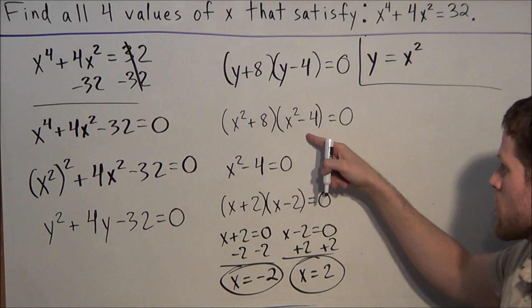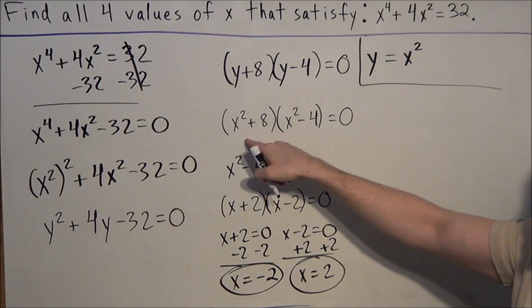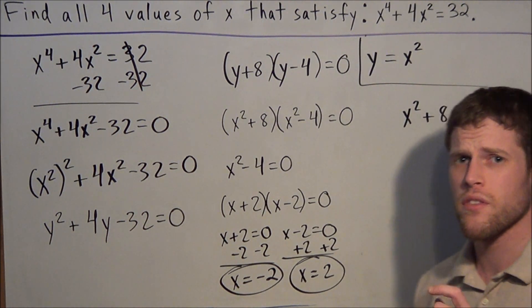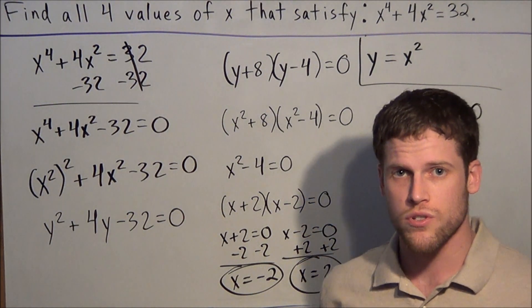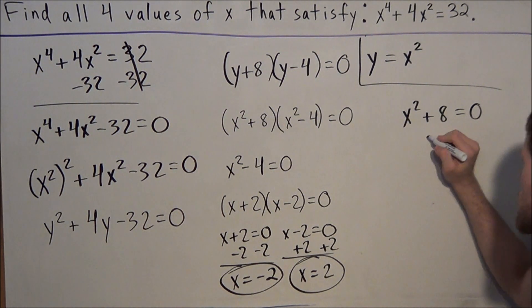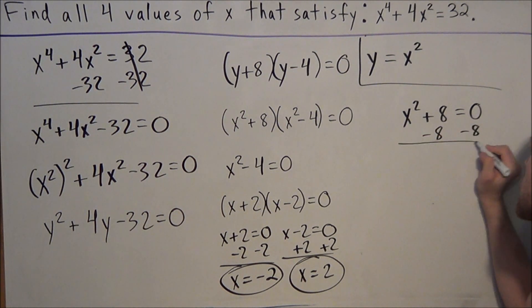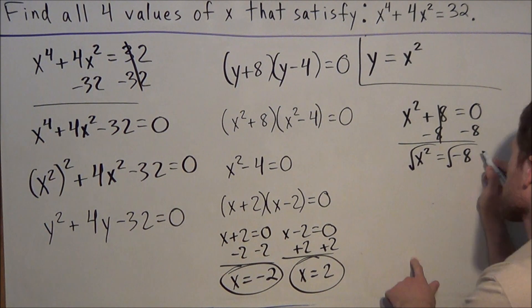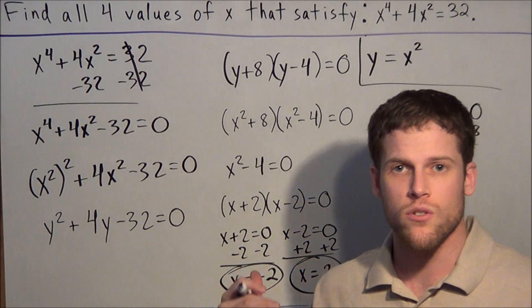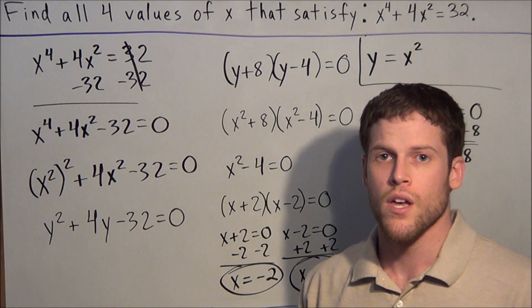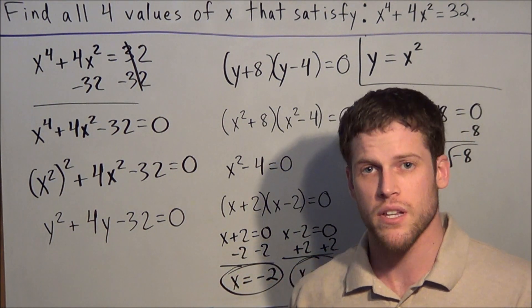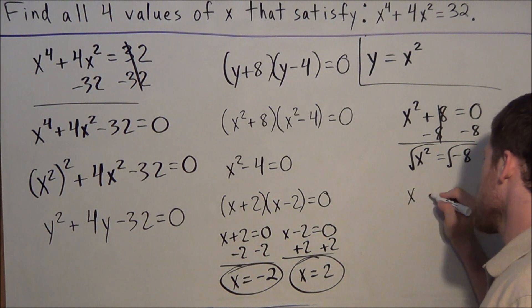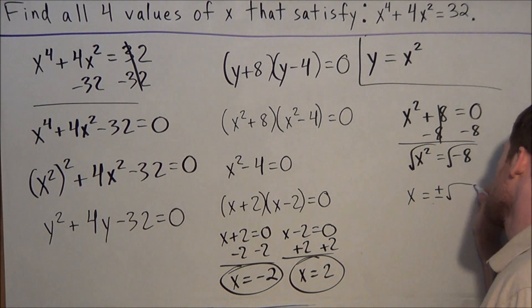Now we set the other factor, x squared plus 8, equal to zero. For this solution we're not going to have real solutions — we're going to have imaginary or complex numbers. We subtract 8 from both sides and get x squared equals negative 8. When we take the square root of both sides, notice we're taking the square root of a negative number, which has no definition in the real number system. So x equals plus or minus the square root of negative 8.